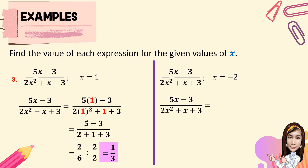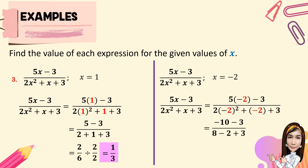When x equals negative 2, substitute: 5 times negative 2 minus 3, all over 2 times negative 2 squared plus negative 2 plus 3. Starting with the exponent: negative 2 times negative 2 is positive 4, times 2 is 8. So 5 times negative 2 is negative 10, minus 3 gives negative 13. For the denominator: 8 minus 2 is 6, plus 3 is 9. So the value of 5x minus 3 all over 2x squared plus x plus 3 when x equals negative 2 is negative 13 over 9, or negative 1 and 4 over 9.